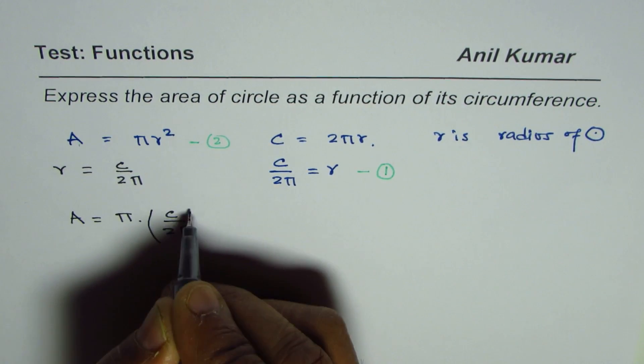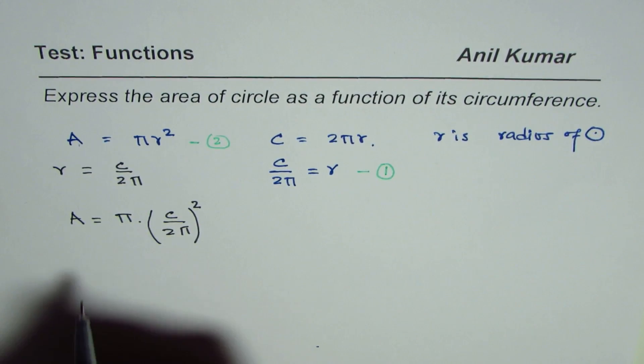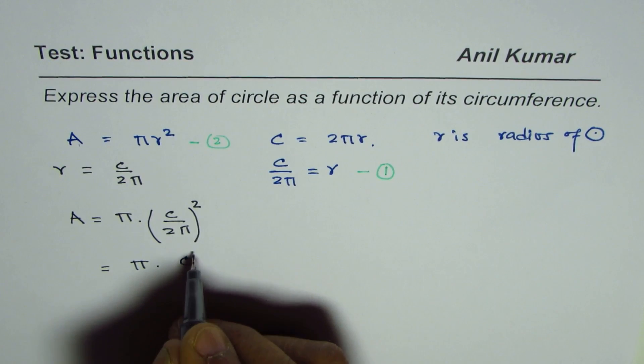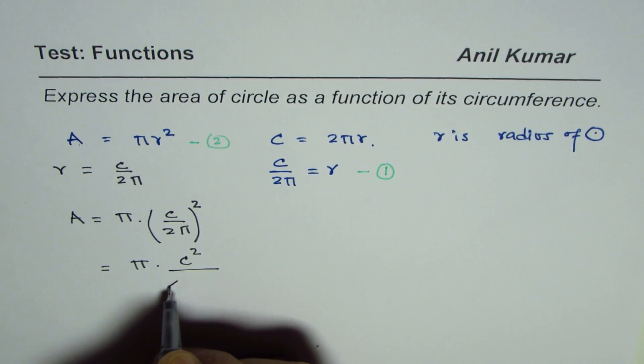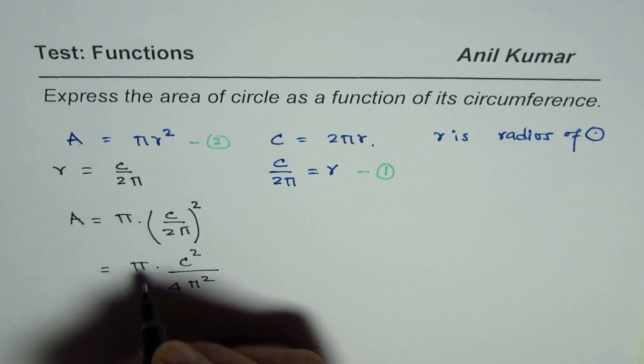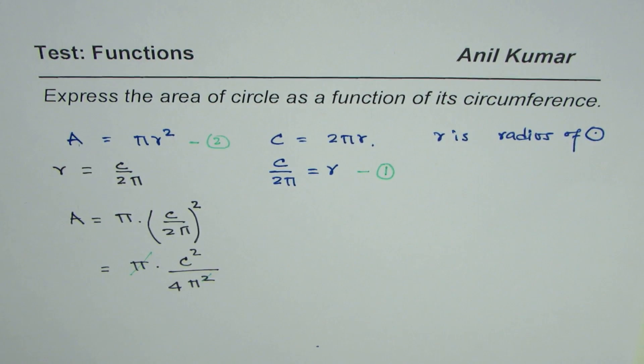Now we can simplify. What we get here is π times C² divided by 4π². Pi and π cancel, so we are left with area equals C² divided by 4π.